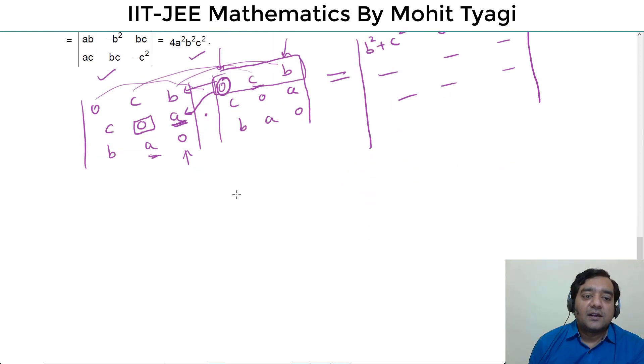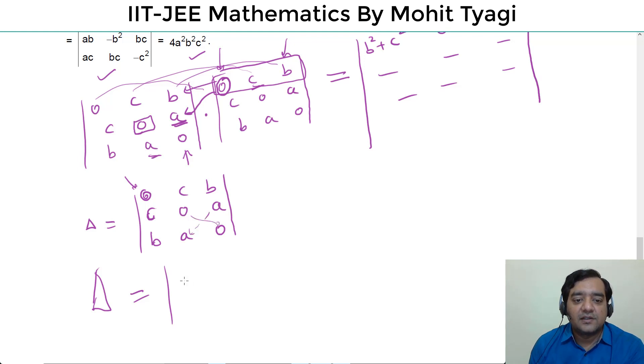Then we will see that if small delta equals 0 c b, c 0 a, b a 0, so big delta is what happens? This 0 is the cofactor, this into this minus this into this.